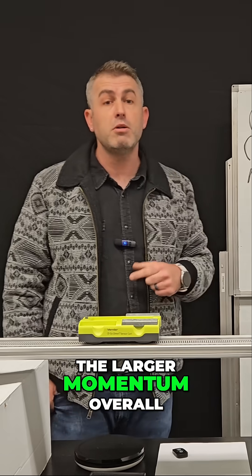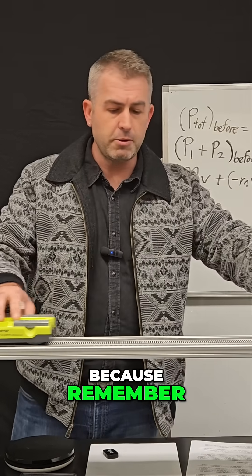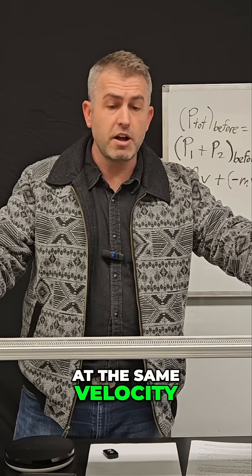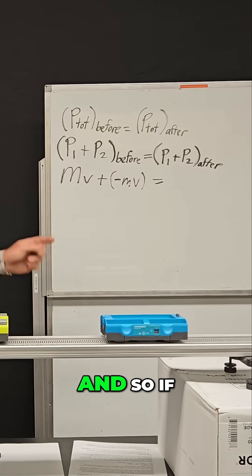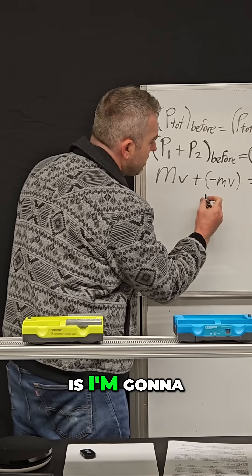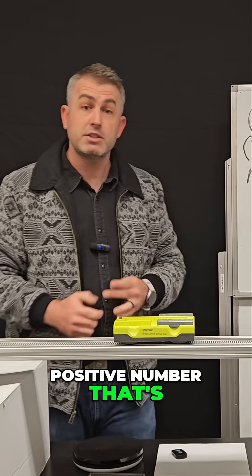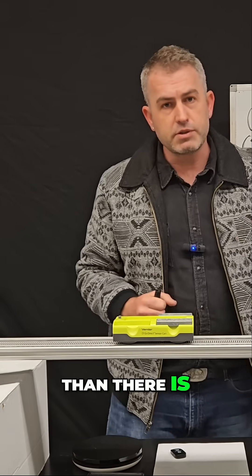In which direction was the larger momentum overall? It was actually the direction of the yellow car. Remember, although they both moved at the same velocity, this yellow car had much more mass. So if you add this number plus this number, I'm going to get some positive number that's greater than zero, because there's more momentum coming from this car than from this car.